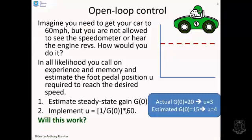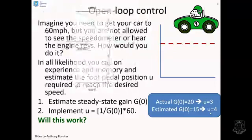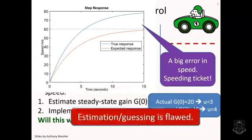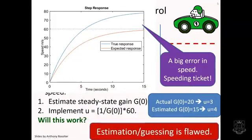Now will this work? Let's consider a realistic situation. You think that G(0) is 15, so therefore you need a U of 4 to get to 60 miles an hour. However, what if G(0) was actually 20? Then in reality, you would only need U equals 3, but you've decided to use U equals 4. You expect the speed to follow this brownish curve and get to 60 miles an hour. But in fact, you're going to end up at 80 miles an hour because your estimate of the gain was wrong. You've got a big error in speed, you're going to get a speeding ticket. The key thing is your estimation or your guessing was flawed and you end up with a problem.